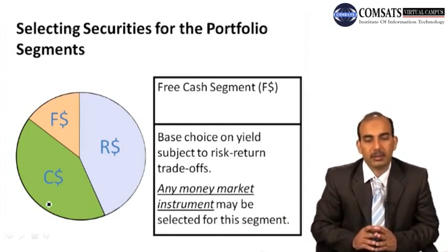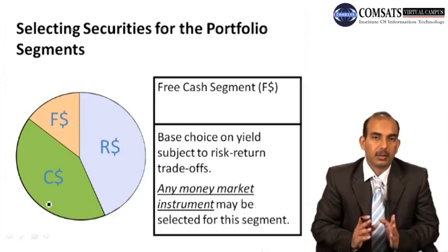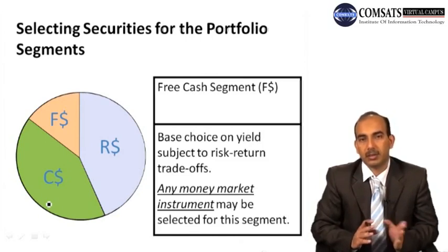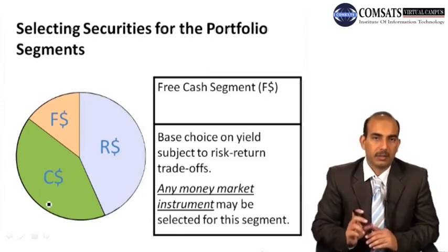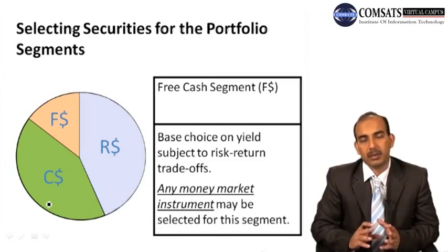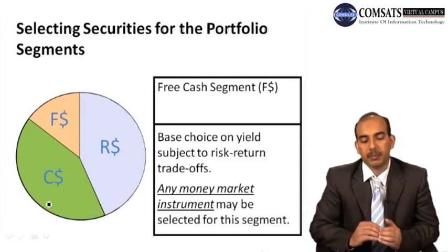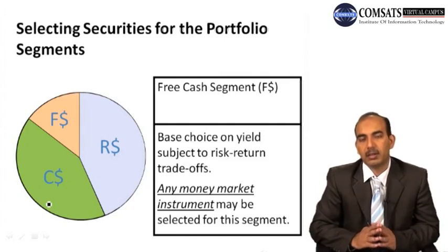The free cash segment is based on the choice of yield, subject to risk-return trade-offs. There is no specific requirement or need associated with this type of cash — the firm can invest it wherever it wishes. The firm's priority here is yield — how much return the firm can get on such investment. Based on the risk-return trade-off, if the firm invests in securities with higher risk, there is a possibility of higher returns, and if risk is lower, returns may be lower. Suitable money market instruments for this segment are any instruments where returns are maximized.